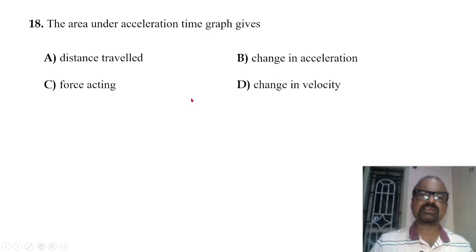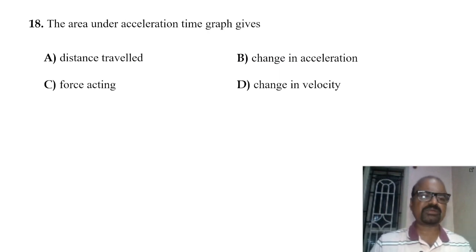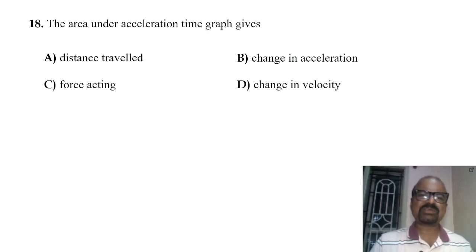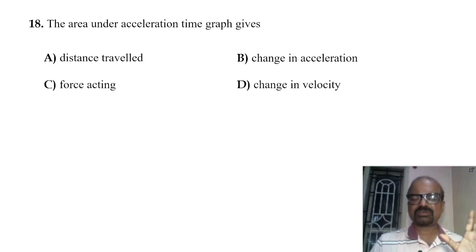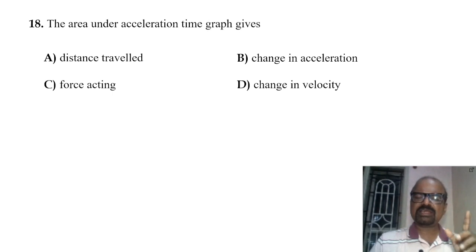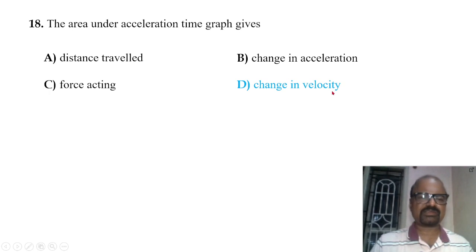The area under the acceleration-time graph gives the change in velocity. If you take the area, the time cancels out, giving delta-v — the change in velocity.